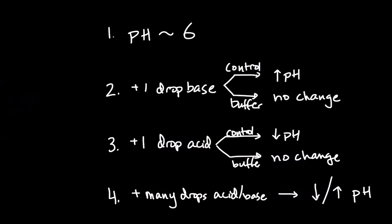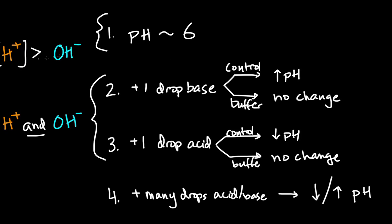So if our buffer isn't just an acid, what is it? Let's review the observations. Observations 2 and 3, taken together, suggest that there are both acidic and basic species present in our solution, since additional acid or base must be neutralized to keep the pH relatively stable. Given observation 1, we can also hypothesize that there would be more acid than base, since the pH of the solution is slightly acidic.